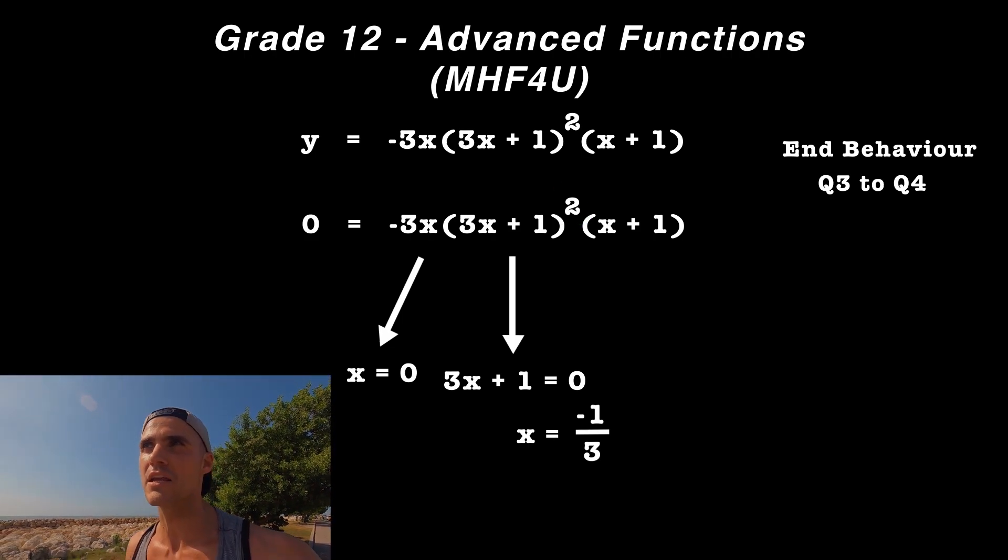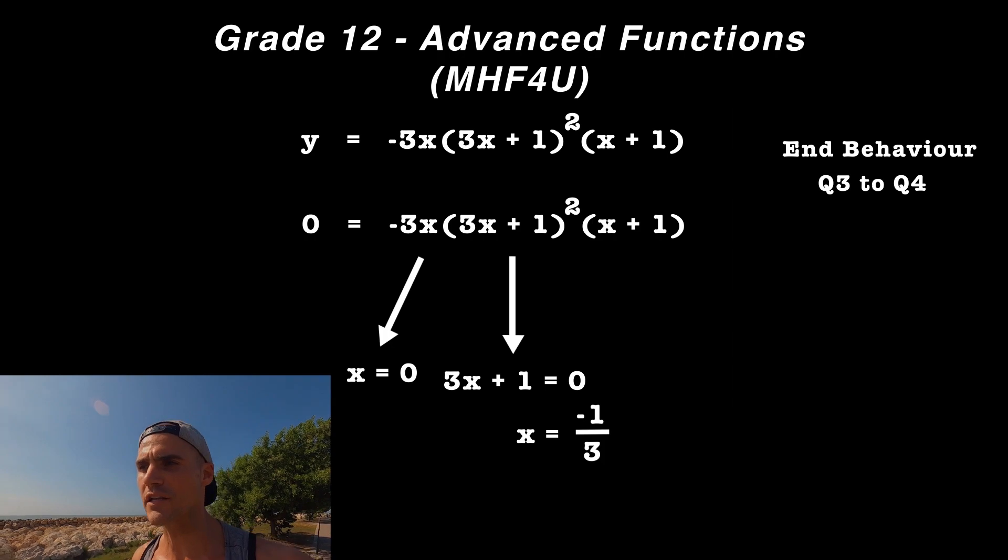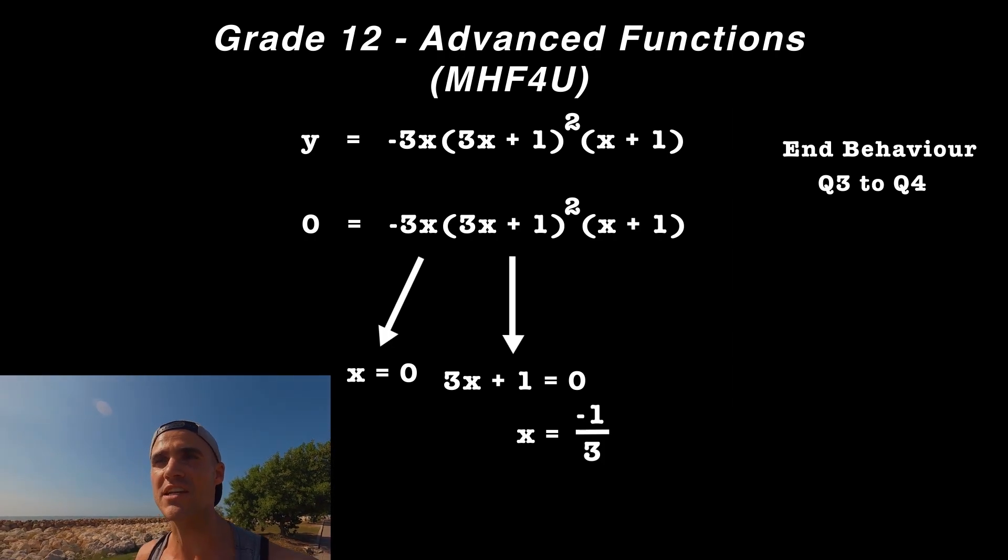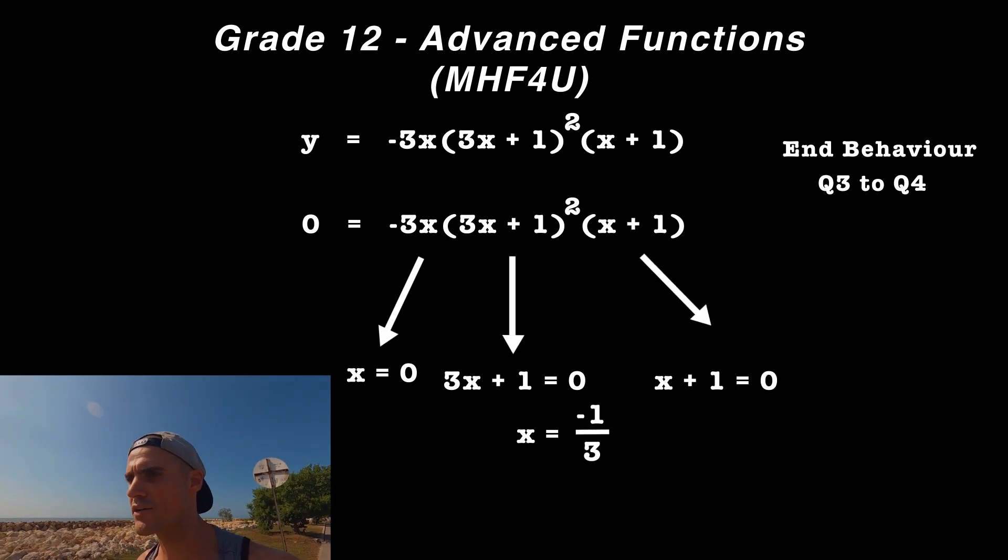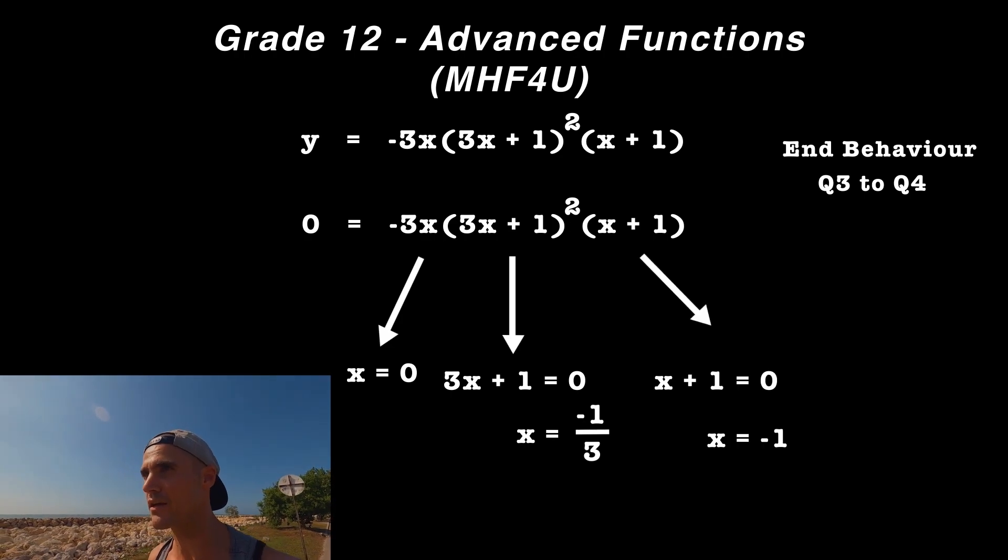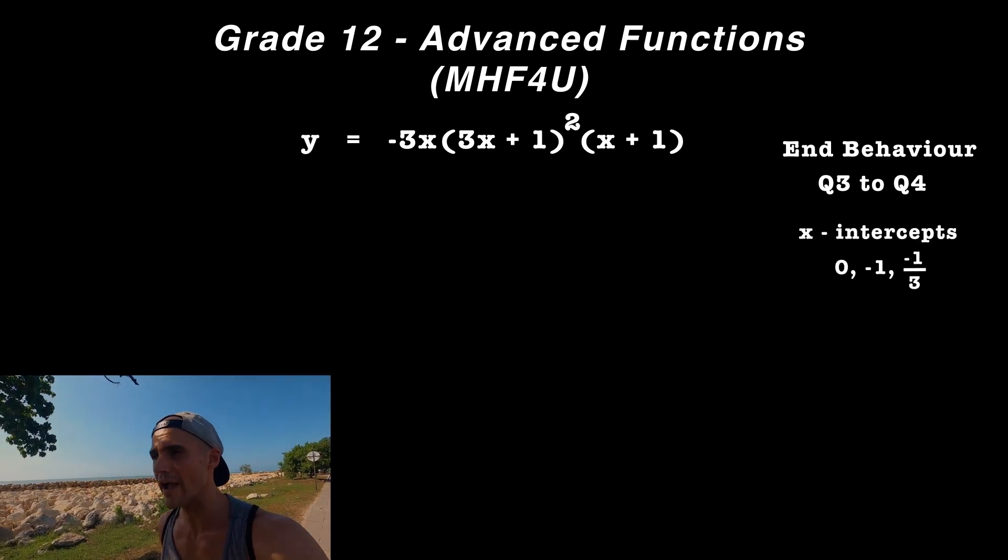The last factor gives an x-intercept of -1. As for the y-intercept, since one x-intercept is 0, we know the y-intercept is also 0. The graph goes through the origin.